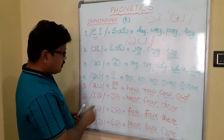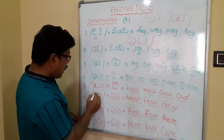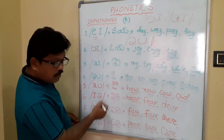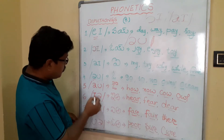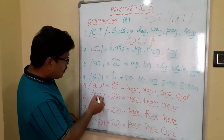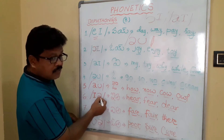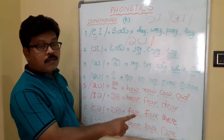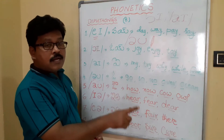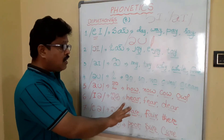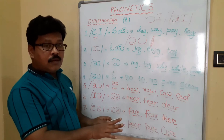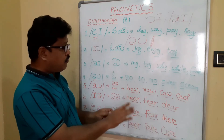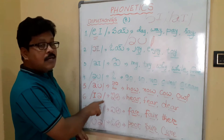The sixth diphthong: if you write I and weak A — weak A is common in the last three diphthongs. I plus weak A gives the /ɪə/ (Ea) sound. Examples: fear, dear, here, near. This is the /ɪə/ sound.